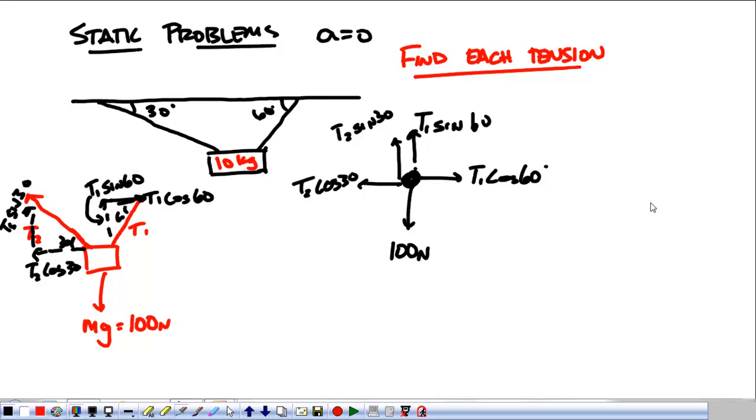So, we have two equations from this. But the big idea here is that the down forces need to equal the up forces. So, 100 newtons has to equal T2 sine 30 plus T1 sine 60.